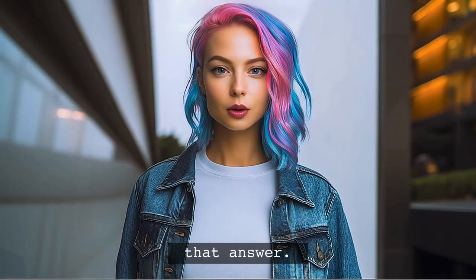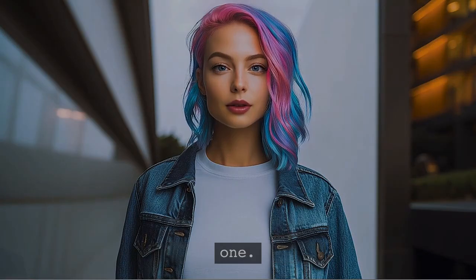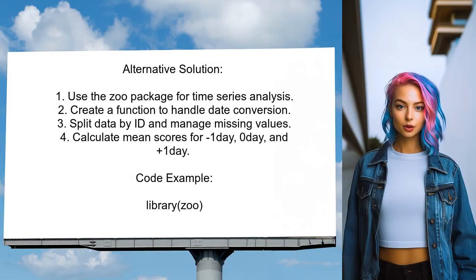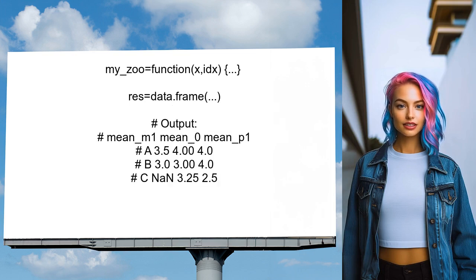That's all on that answer. Let's take a look at another one. An alternative approach suggested by another user involves using time series packages, specifically the zoo package in R. They create a function to convert the data into a zoo time series format, which helps in handling missing dates. The user then splits the data by ID and calculates the required statistics while ensuring that scores from consecutive drug-taking days are excluded from the calculations for the previous and following days.